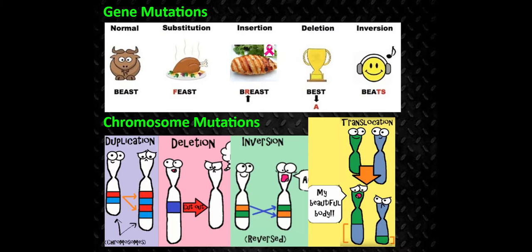Gene mutations are represented in the models on top, and you can see that the order of the letters or the order of the bases are changed. Down on the bottom, chromosome mutations — you can see the form of these chromosomes has been changed in some way. So we're going to look at those mutations in the form of the chromosome.